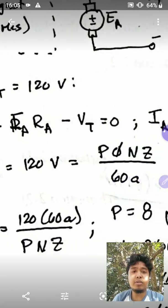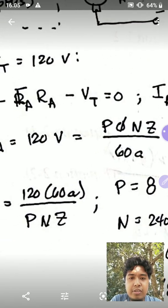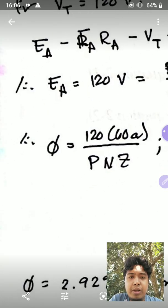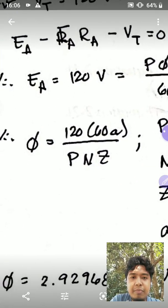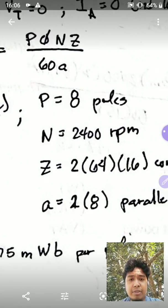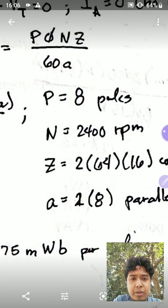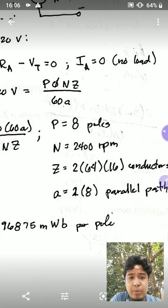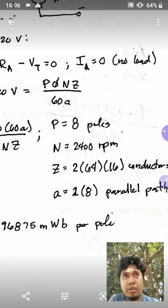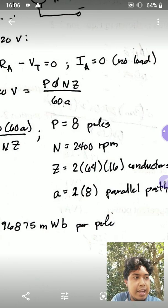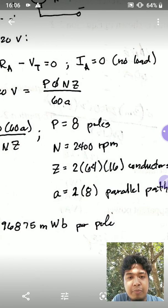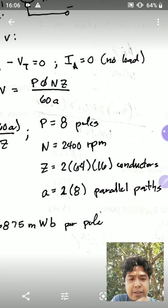The induced voltage at the armature is equal to PΦnZ over 60A. Here P is the number of poles, n is RPM, Z is the total number of conductors, and A is the number of parallel paths. If we isolate the flux per pole from this equation, and substitute the given values — 8 poles, 2400 RPM — the total number of conductors Z comes from 2 times the number of turns times the number of coils: 2 × 16 × 64 = 2048 conductors. The number of parallel paths A equals 16. I'll explain that illustration later.